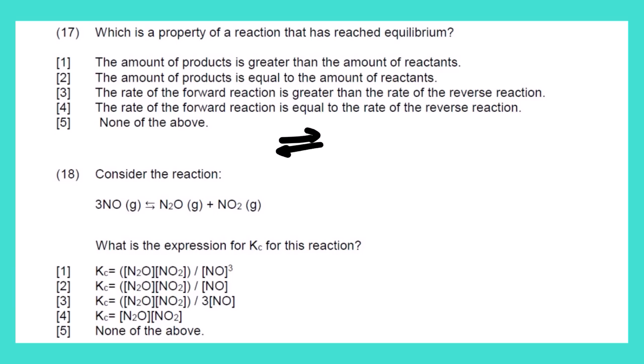Looking at the first option, it says the amount of product is greater than the amount of reactants — it cannot be this one. The amount of products equals the amount of reactants — it cannot be this one either. The rate of the forward reaction is greater than the rate of reverse reaction — cannot be this one. The rate of the forward reaction equals the rate of the reverse reaction — this is the correct option. So the answer for question 17 is option 4.